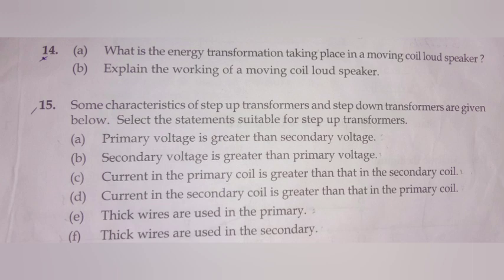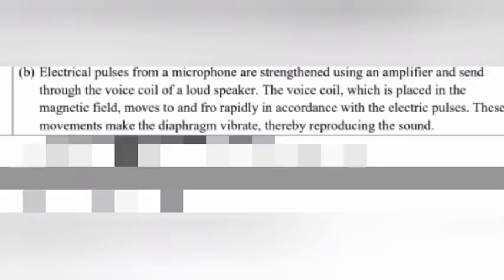(b) Explain the working of a moving coil loudspeaker. Electrical pulses from a microphone are strengthened using an amplifier and sent through the voice coil of a loudspeaker. The voice coil which is placed in the magnetic field moves to and fro rapidly in accordance with the electric pulses. This movement makes the diaphragm vibrate, thereby reproducing the sound.